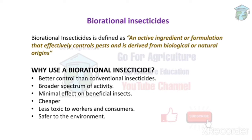First, what are bio-rational insecticides? They are plant-based, meaning naturally extracted. For example, we can extract neem oil from the neem tree and use it as an insecticide or repellent. The active ingredient is the main source - in this case, neem oil is the active ingredient which kills or repels insects.